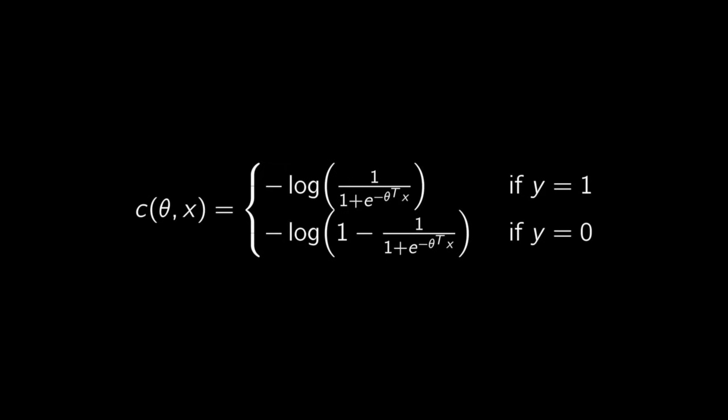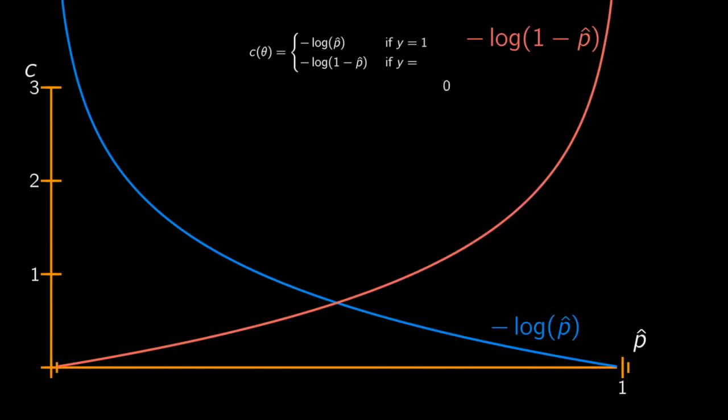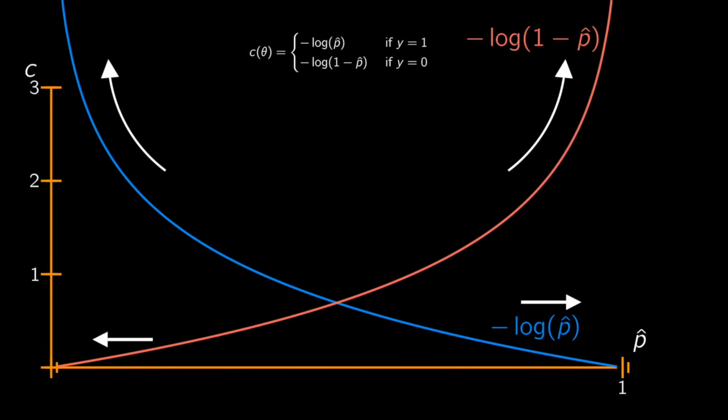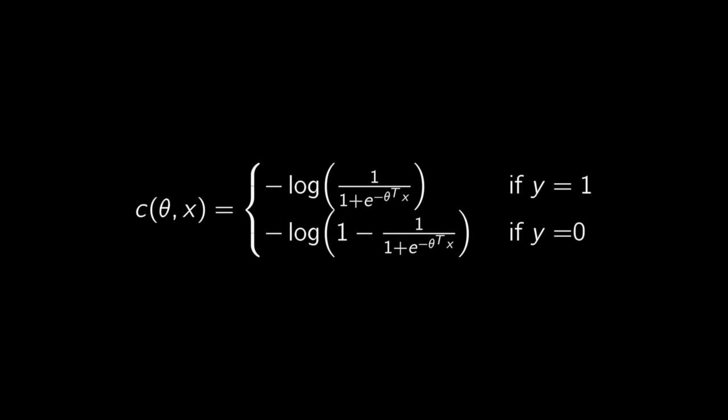The cost function makes sense because minus log t grows very large when t approaches zero. So the cost will be large if the model estimates a probability close to zero for a positive instance. On the other hand, it will also be large if the model estimates a probability close to one for negative instances, which is precisely what we want.